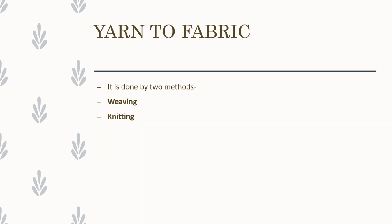Now we have yarn. We have to make clothes out of it. Yarn to fabric is done by two methods. The fiber is first converted into yarn — the process called spinning, which means twisting the fibers to make yarn. Now, how to convert that yarn into fabric? There are two methods: one is weaving and another is knitting.